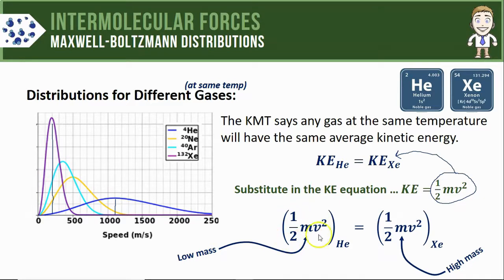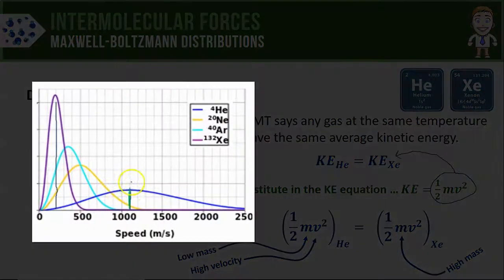The only way that my helium side of the equation with a very small number plugged in for mass, the only way that that's going to equal the kinetic energy of the xenon particles with a much greater mass, is if the velocity sort of makes up the difference. In other words, the velocity on the helium side must be much greater so that it equals out the xenon side. That's why on the distribution curve the helium particles have a much greater average speed.